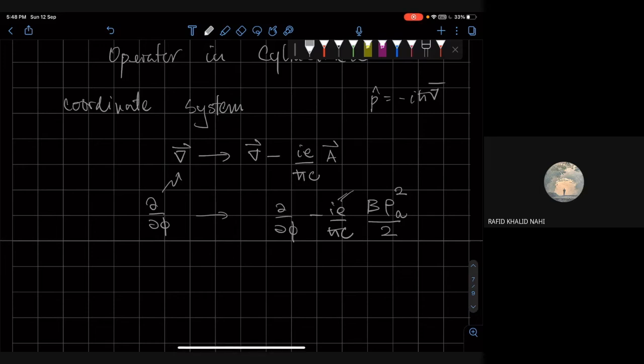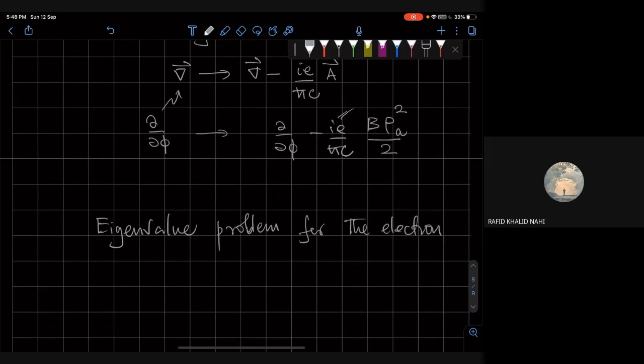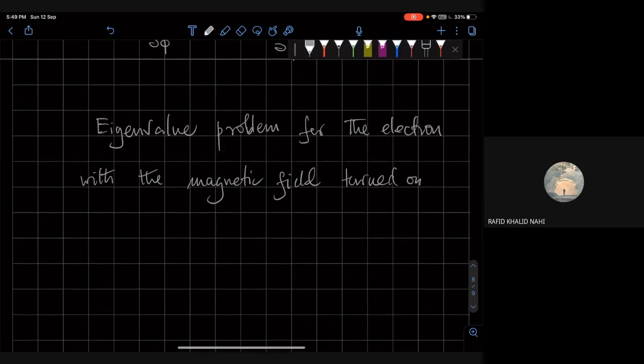So when this happens, that means the eigenvalue problem now for the electron with the magnetic field turned on changes.